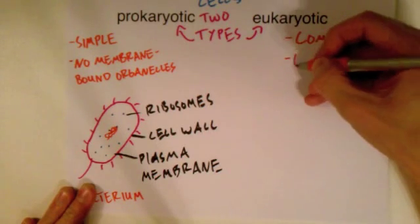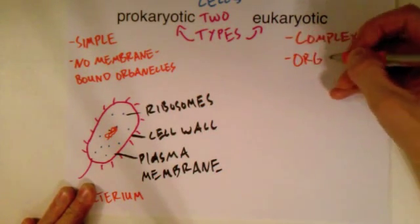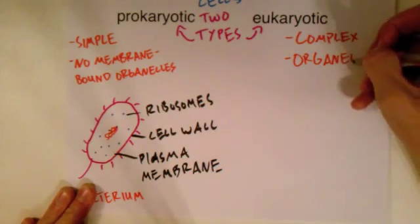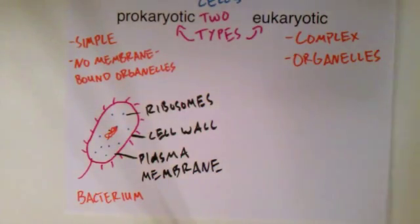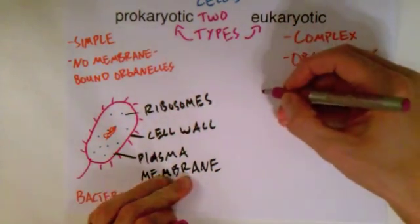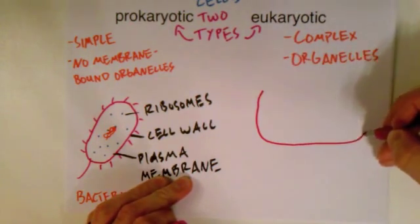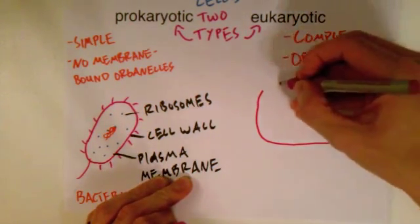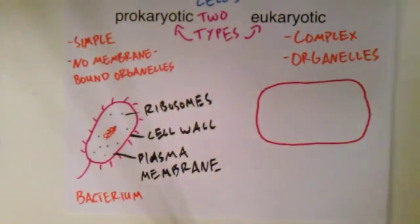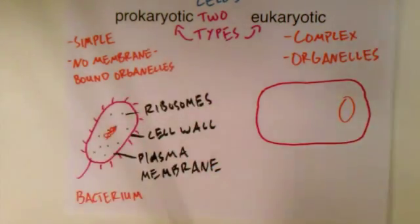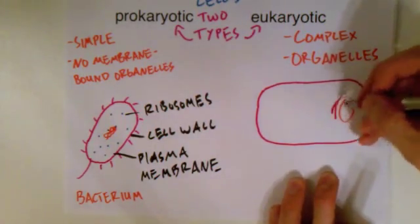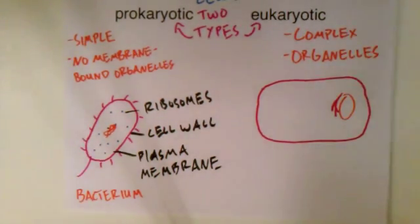And within the eukaryotic cells, you are going to find organelles with membranes. So I'm going to draw an example of a eukaryotic cell here and some of the organelles and different parts of this eukaryotic cell.